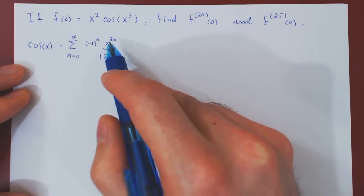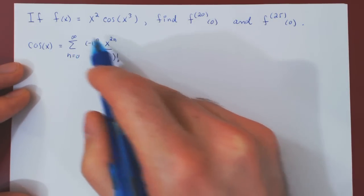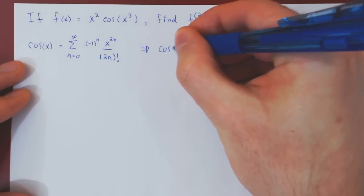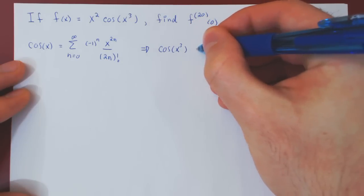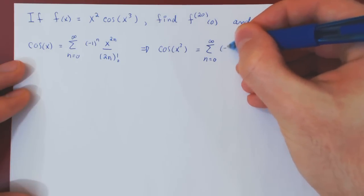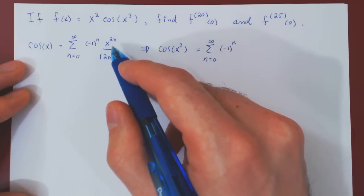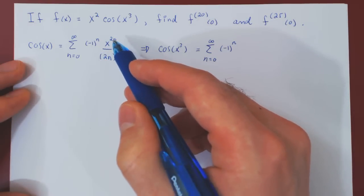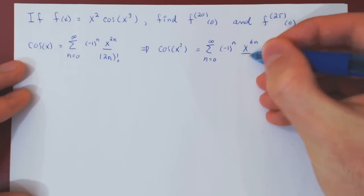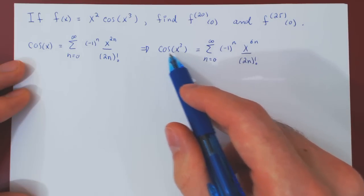Because of this, we can replace x by anything we want. Since we have cos of x cubed, let's replace x by x cubed in the equality, which gives us that cos of x cubed, as a Maclaurin series, is equal to... if you take x cubed and exponentiate to 2n, you multiply the exponents: 3 times 2n is 6n, so we get x to the 6n over 2n factorial. Here is the Maclaurin series for cos of x cubed.